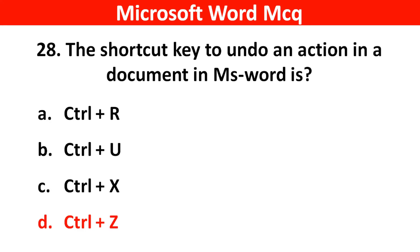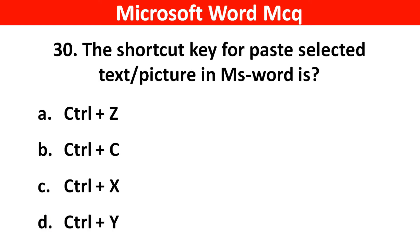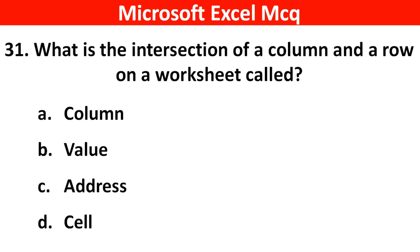Next question: The shortcut key to redo an action in a document in MS Word is? Right answer is Option D: Ctrl plus Y. Next question: The shortcut key for cut selected text or pictures in MS Word is? Right answer is Option C: Ctrl plus X. Next question: What is the intersection of a column and a row on a worksheet called? Right answer is Option D: Cell.